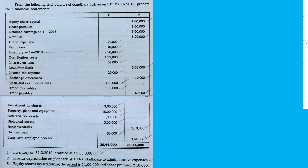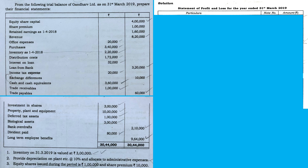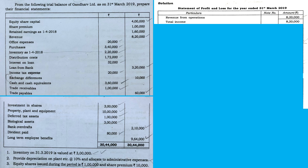First of all, let us begin with the statement of profit and loss. This is the format — I believe you all know the format for preparing the statement of profit and loss. Let us begin with the first item: revenue from operations. We all know what is the main source of revenue. Revenue is directly given as 8,20,000, and there are no other items regarding other revenues. So the total income is 8,20,000.